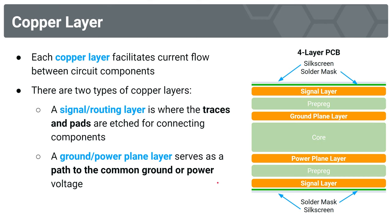Let's talk about those copper layers. Each copper layer facilitates current flow between the components. Typically, in a four-layer stack-up, the outermost copper layers at the top and bottom will be designated as signal or routing layers — where traces and pads are etched for connecting components. In a four-layer PCB, the two innermost layers serve as planes: one for ground and one for power. The ground plane is the return path, and the power plane is the starting path for the power voltage going into components.